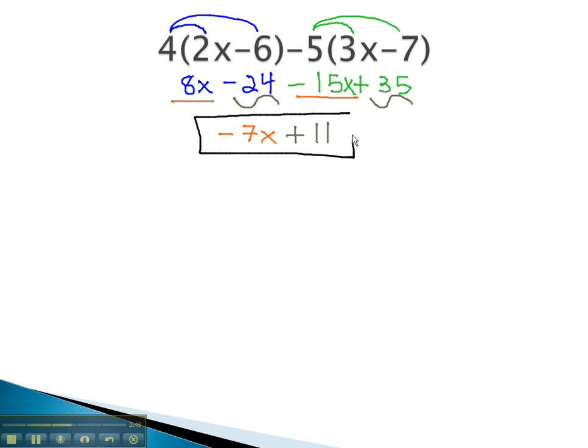Our final answer is negative 7x plus 11. We can't simplify any further because they are not like terms. The negative 7 has an x, the 11 does not.